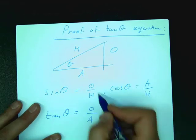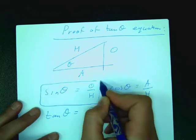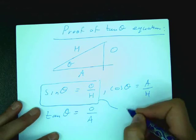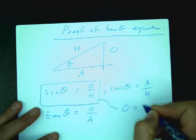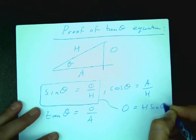Now, if I take sine of theta equation and I rearrange to get O, what do I get? O equals h sine theta.